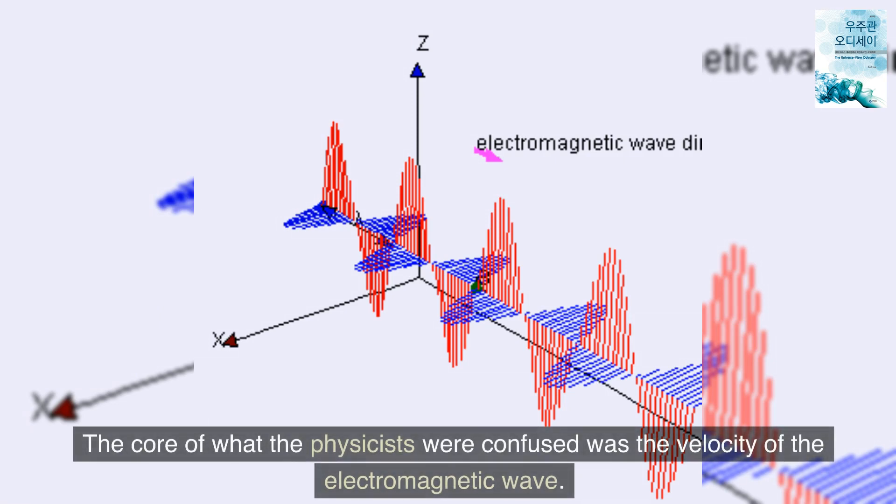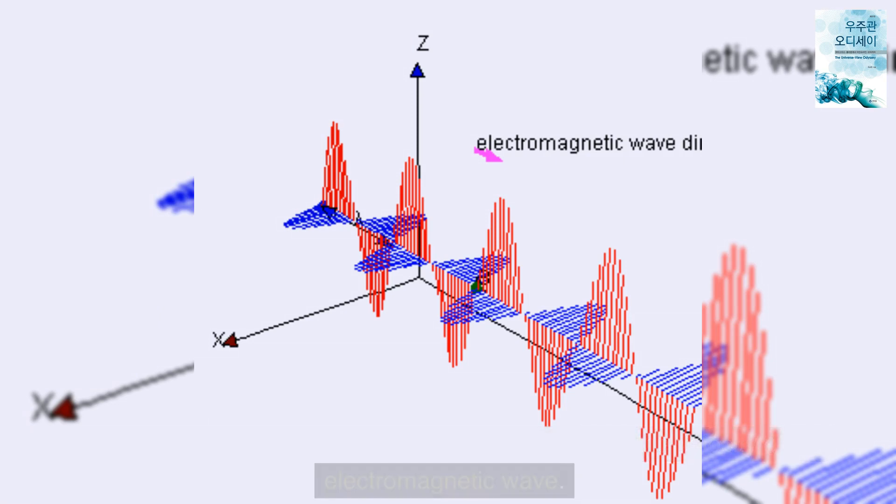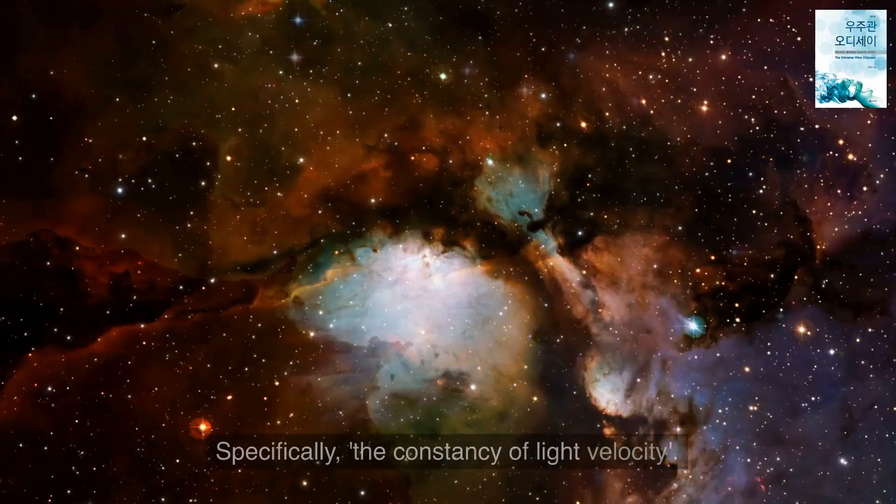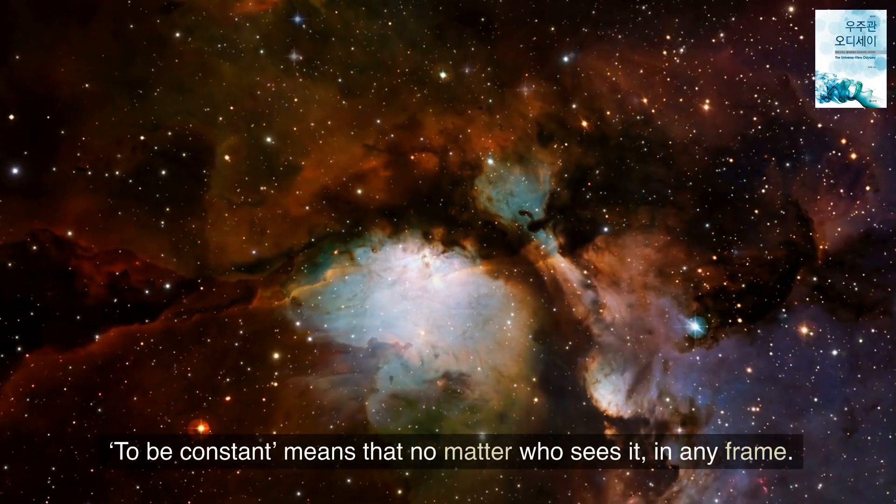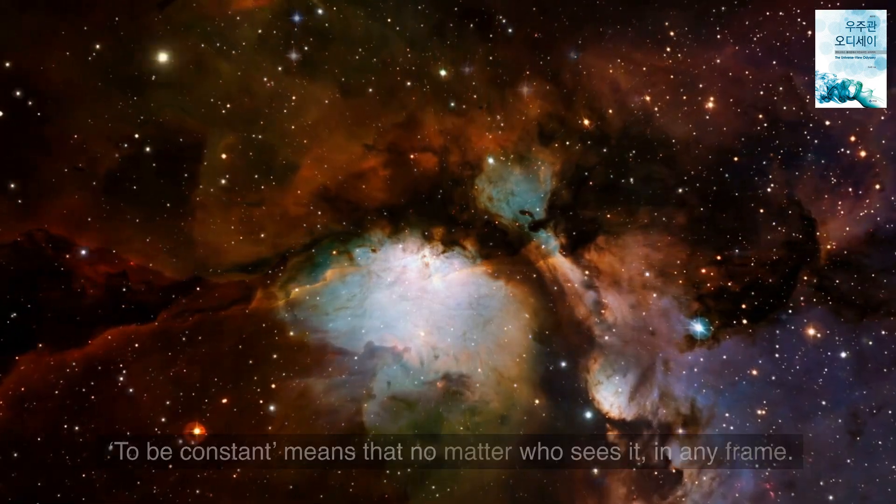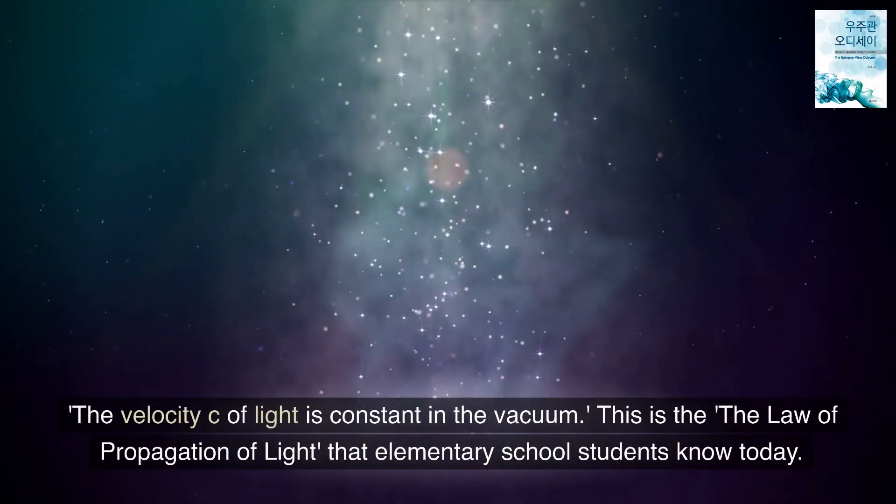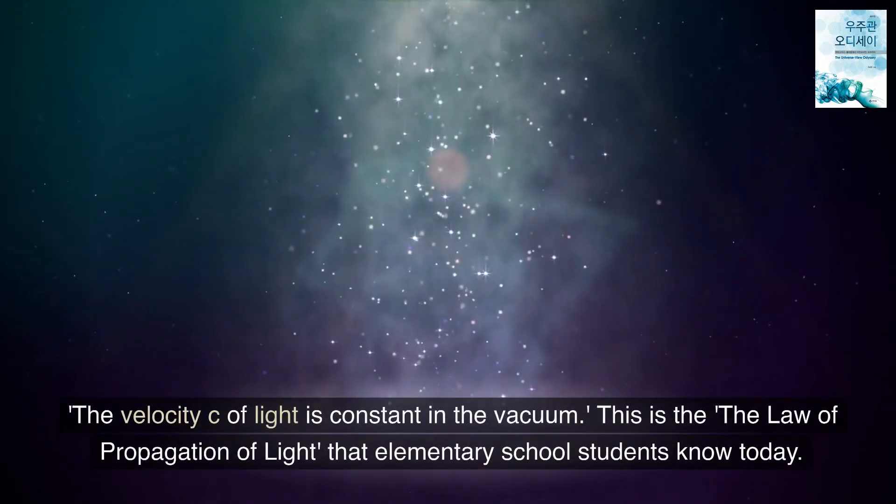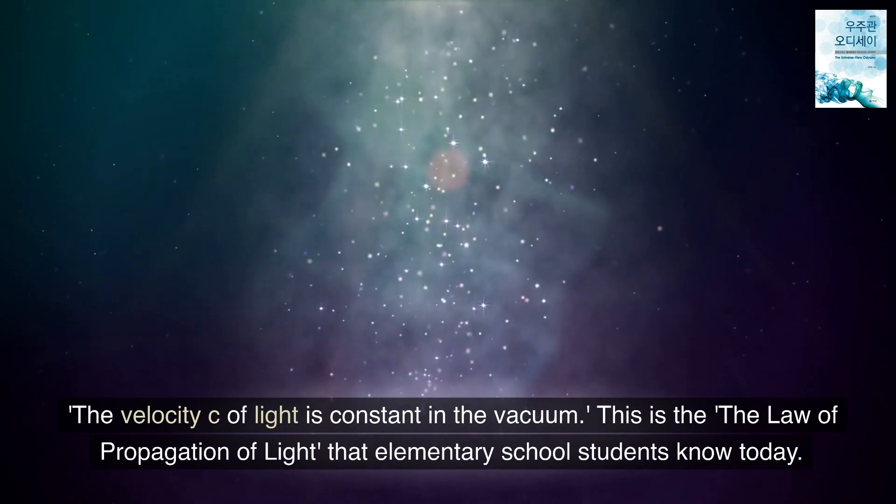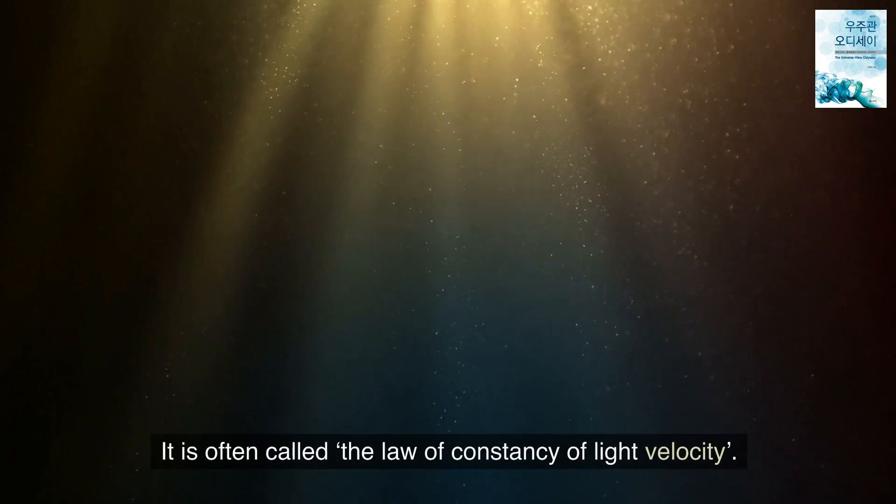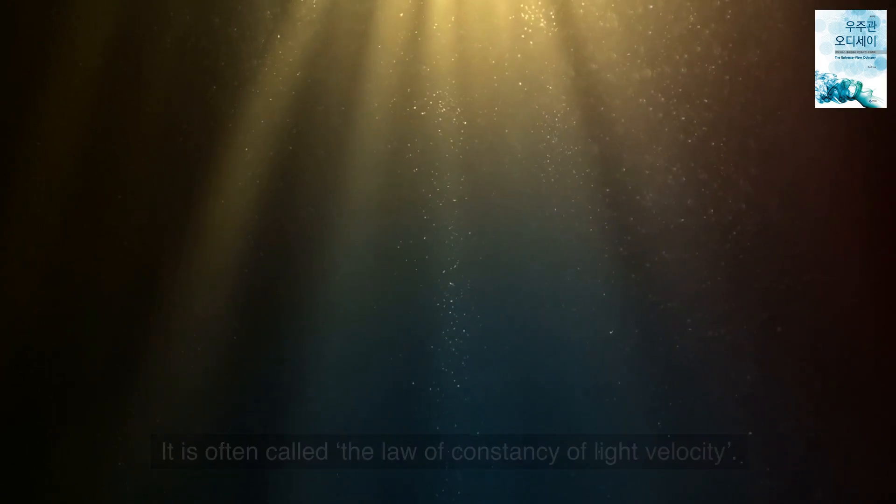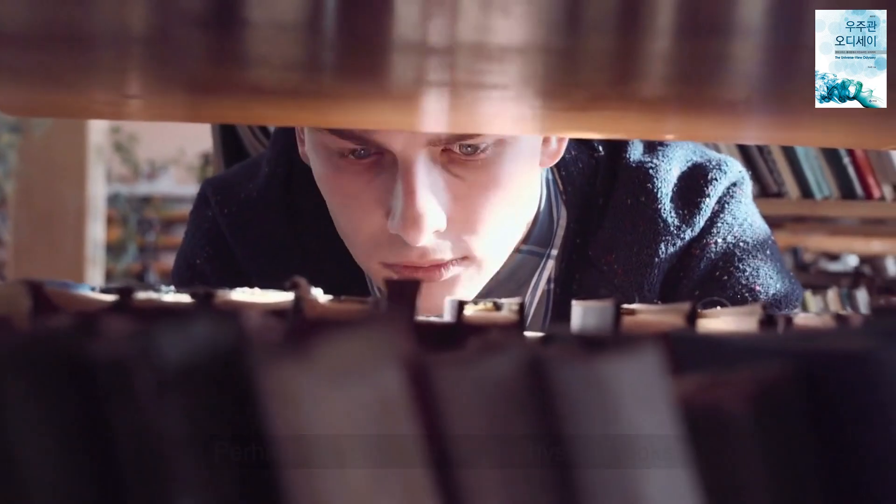The core of what the physicists were confused was the velocity of the electromagnetic wave, specifically the constancy of light velocity. To be constant means that no matter who sees it in any frame, the velocity C of light is constant in the vacuum. This is the law of propagation of light that elementary school students know today. It is often called the law of constancy of light velocity, perhaps the simplest law in physics books.